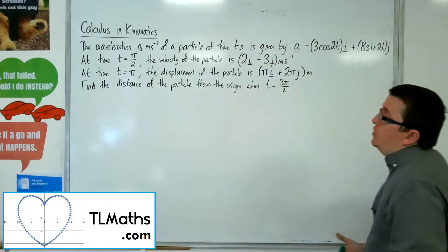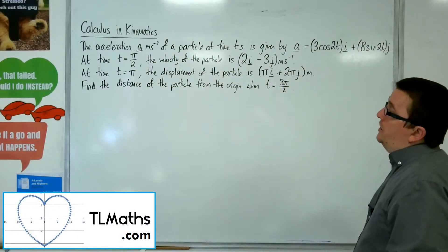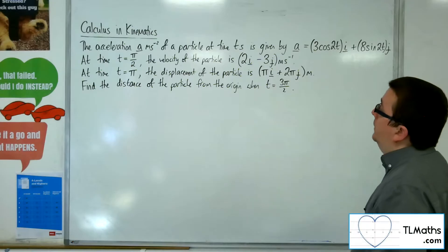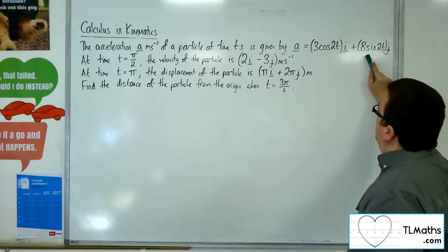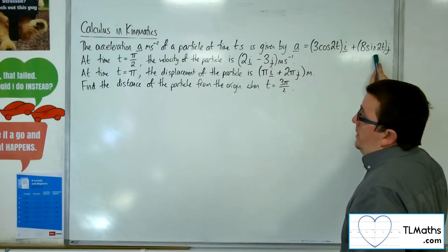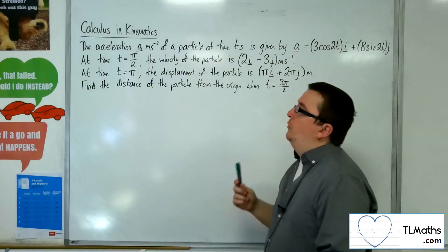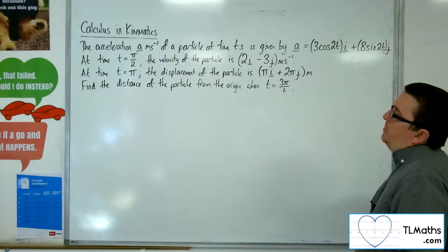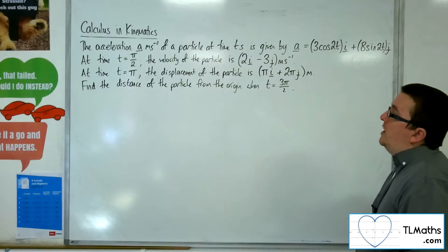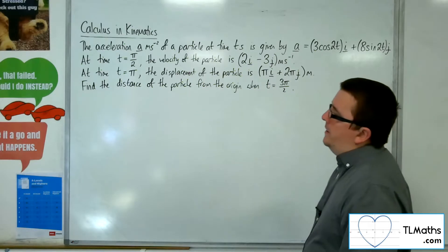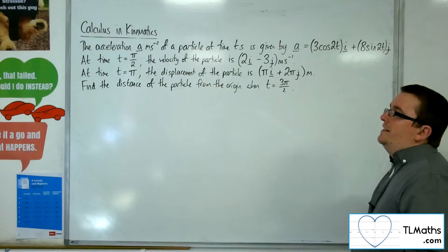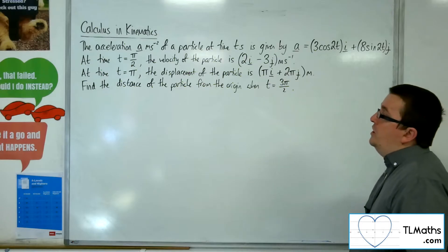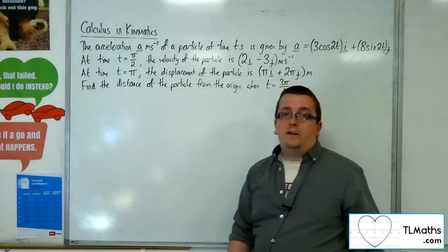In this problem, the acceleration a metres per second per second of a particle at time t seconds is given by a equals 3 cos 2t i plus 8 sine 2t j. At time t equals π/2, the velocity of the particle is 2i minus 3j metres per second. At time t equals π, the displacement of the particle is πi plus 2πj metres. Find the distance of the particle from the origin when t equals 3π/2.